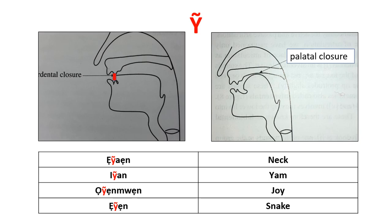The eighth sound is a combination of a palatal closure and another movement: the middle blade of your tongue is against your hard palate while your teeth are close together. Examples in Edo: one word for neck, one meaning joy, and 'oya' is the Edo word for snake.